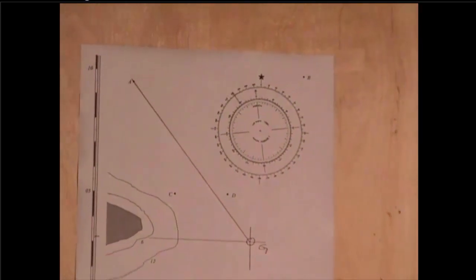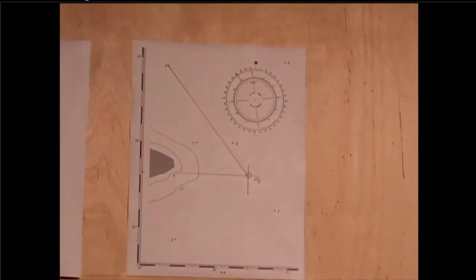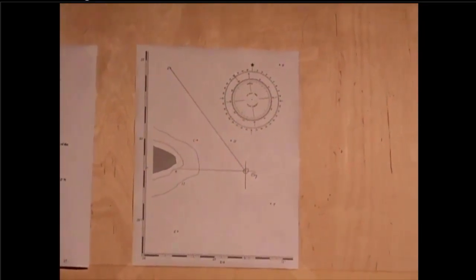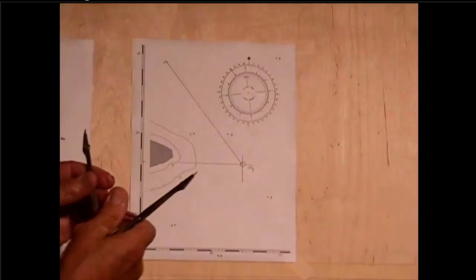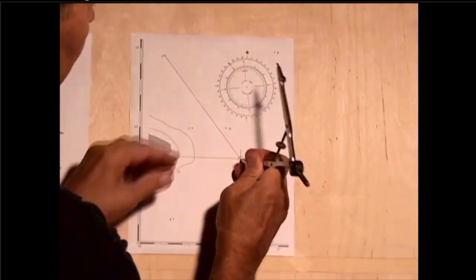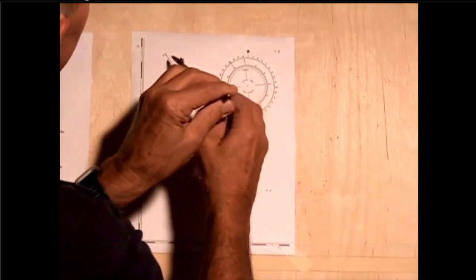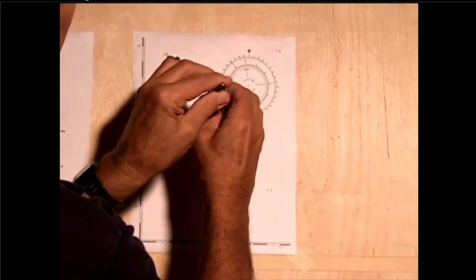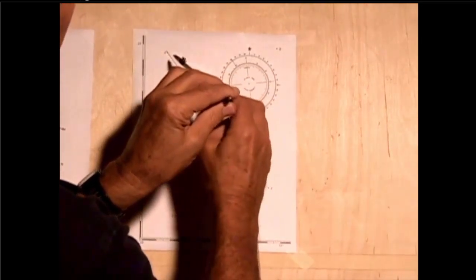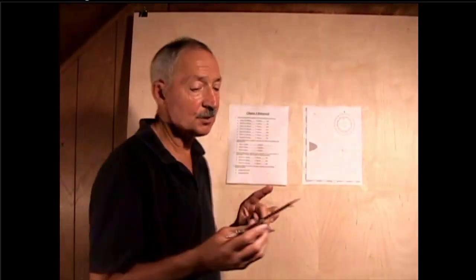The next question is, what is the distance from G to A? And for that, I'll take my dividers, put the point at G, and extend the dividers out. Well, it won't reach A. My dividers are not large enough to reach from G to A. So, therefore, I have to use a different procedure.